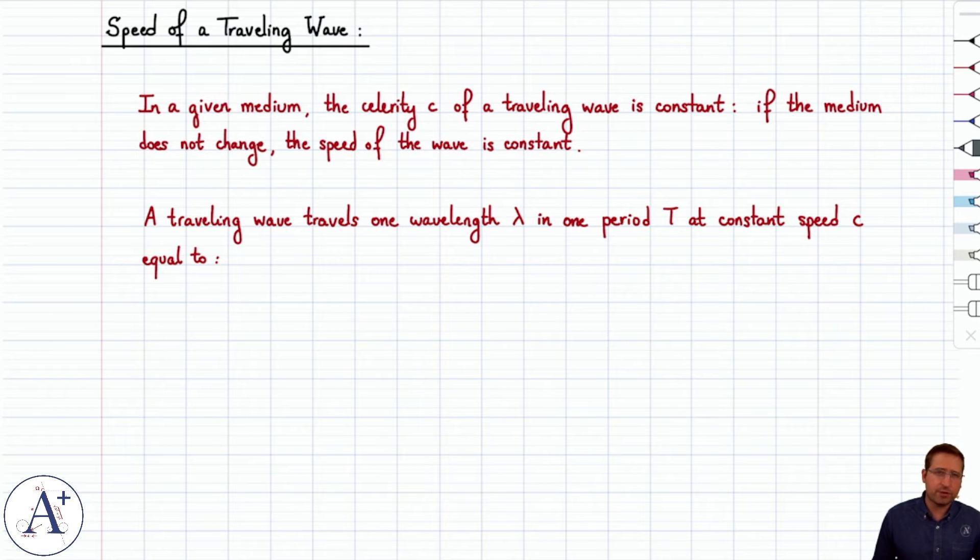The speed of a traveling wave is called the celerity of the wave and is denoted by lowercase c and has two interesting properties.